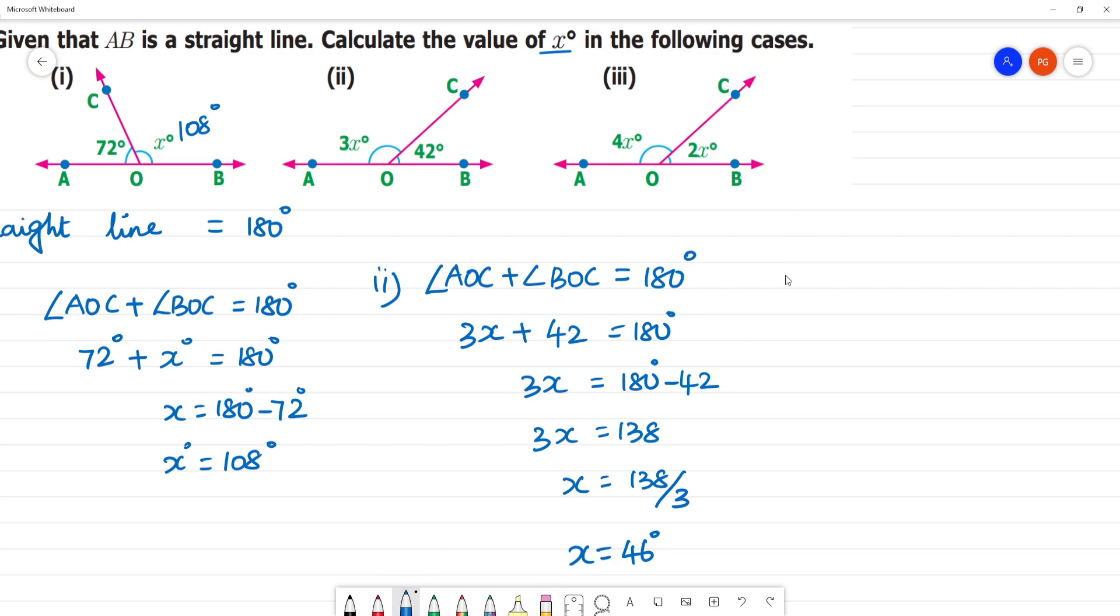Next, the third one. Angle AOC plus angle BOC equals 180 degrees. Angle AOC equals 4x, angle BOC equals 2x, that equals 180 degrees. So 6x equals 180 degrees. What is x? X equals 180 divided by 6. 1 times 6 is 6, 3 times 6 is 18. So x is equal to 30 degrees.